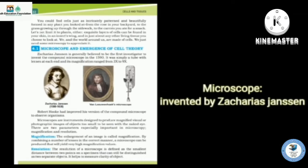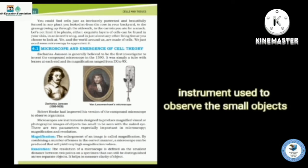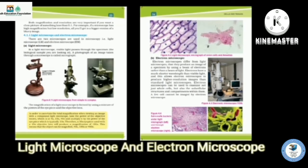Our first topic is microscope, invented by Z. Cheris Jensen. It is an instrument used to observe the small objects. There are two types of microscopes, light microscope and electron microscope.